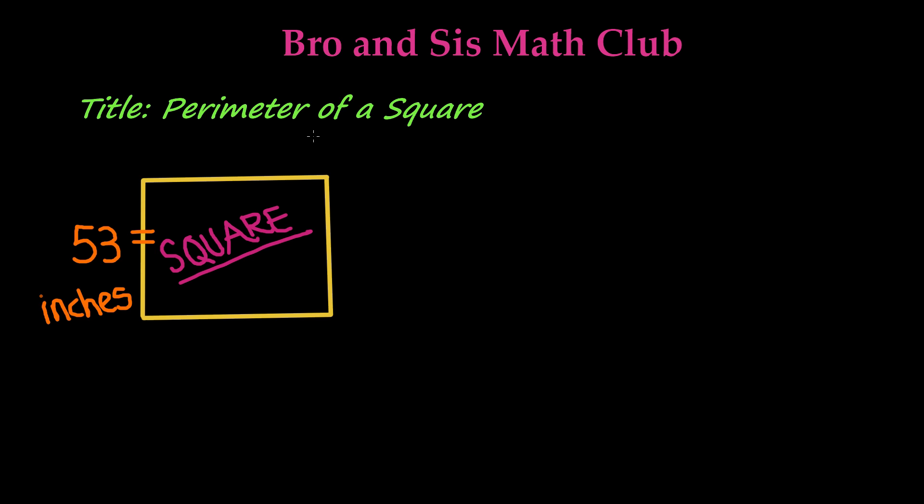When you're finding the perimeter of a square, it's one of the easiest shapes because all the sides of a square are the same measurement. So as long as you know the measurement of one side, rather than having to add that measurement four times, you can just simply multiply it by four.